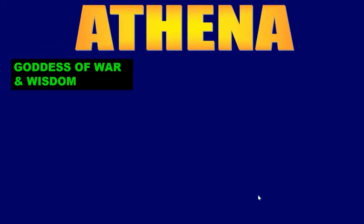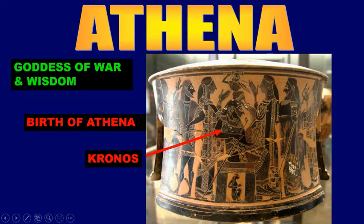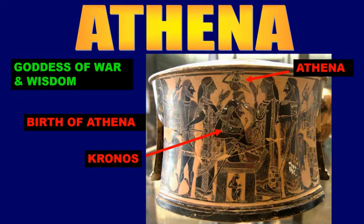Next I want to teach you about Athena. Write down this definition: Athena was the goddess of war and wisdom. This particular vase shows the birth of Athena — this is a black figure vase. That figure there is Kronos, the first god, and all the major gods were born from him: Zeus, Athena, Hera, Poseidon, Hades, Ares, Aphrodite. And that's little Athena coming out of his head — they were born out of his head. Greeks had interesting ideas about how this stuff happened, but that's where she was born from.